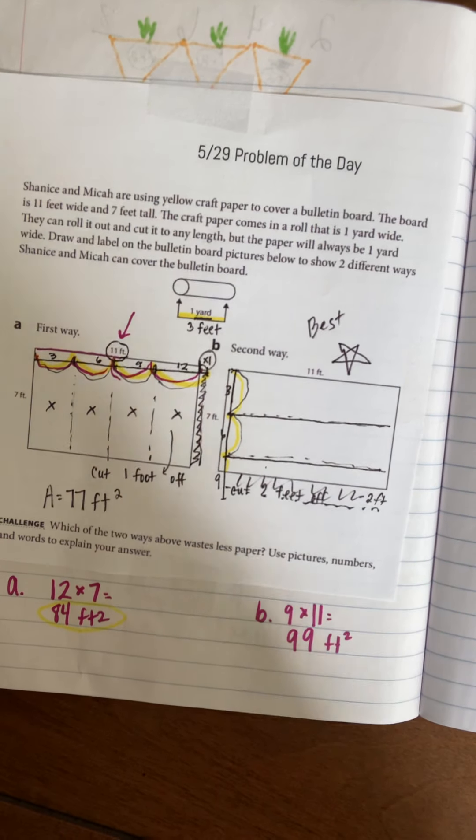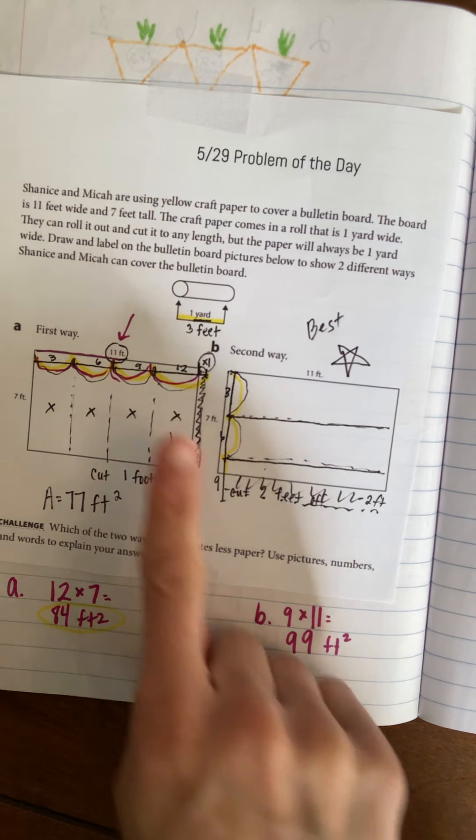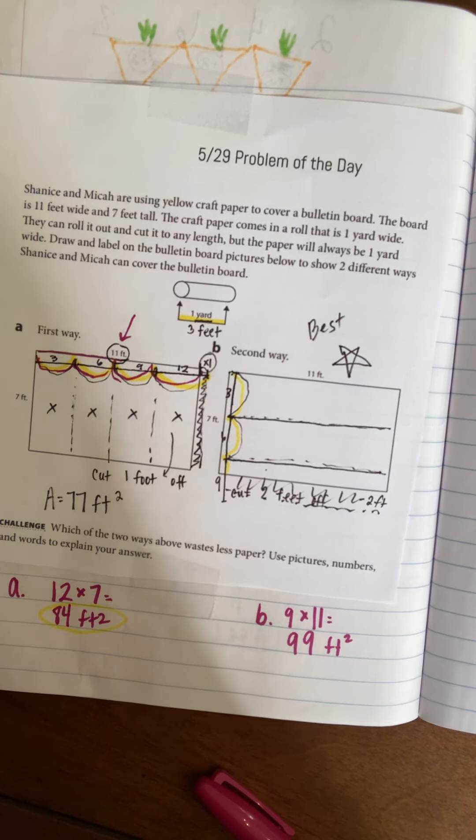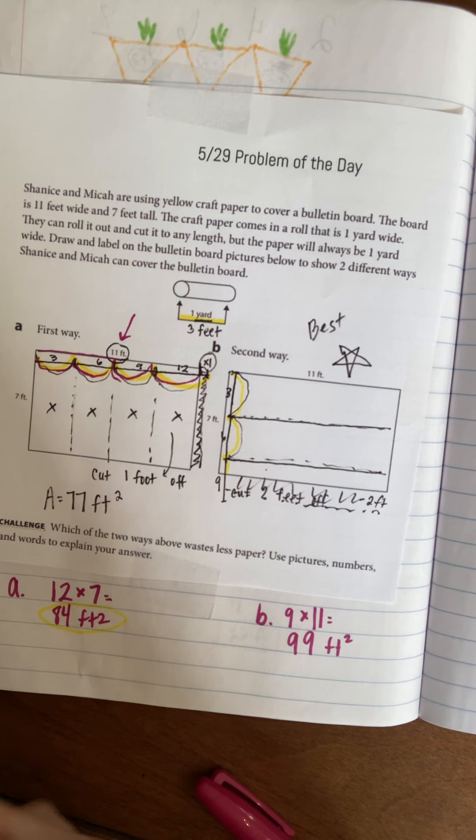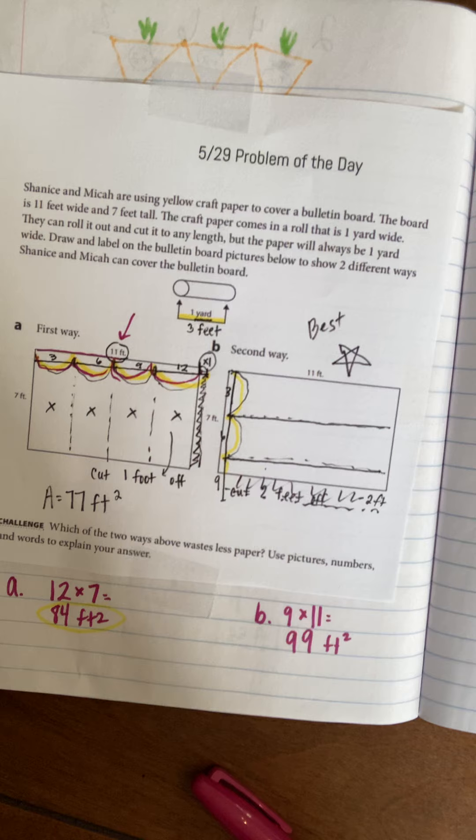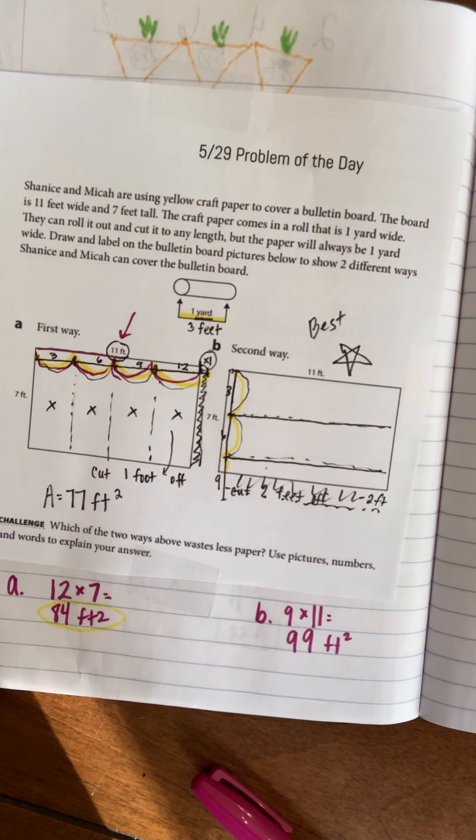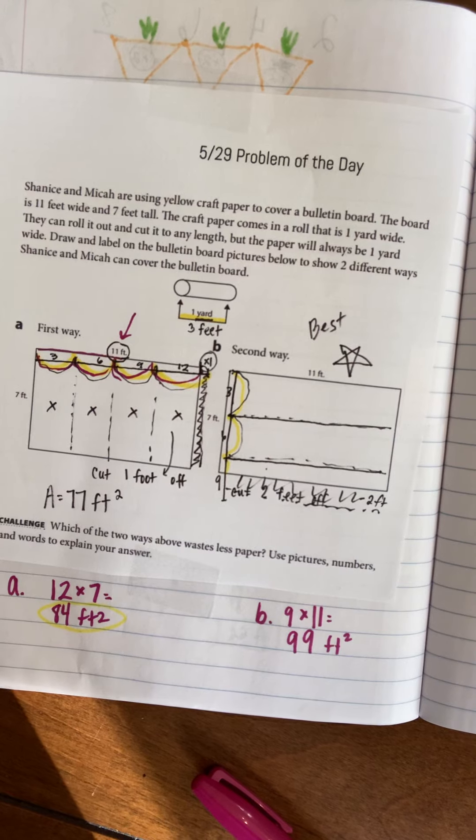People have to make these kinds of decisions in the real world - oh, I don't have that much paper, so I might do this one. Or, I want it to look really good because it's on my bulletin board all year, so you might choose the one that takes a little bit more. It's a real-world situation that we use math for.